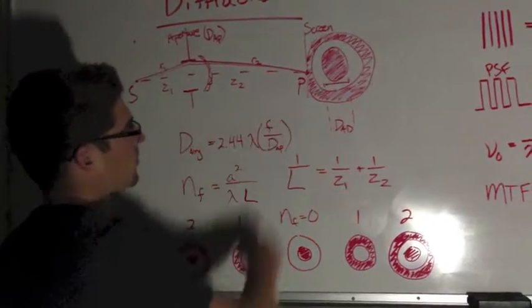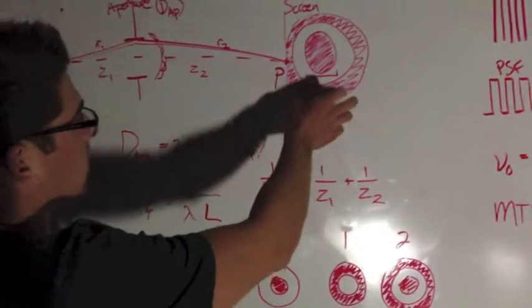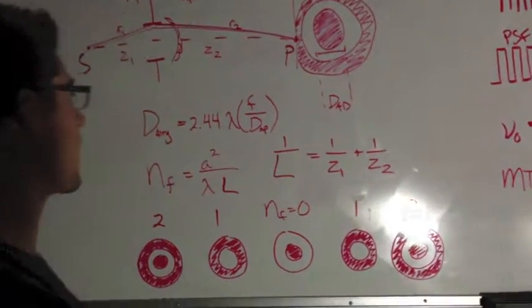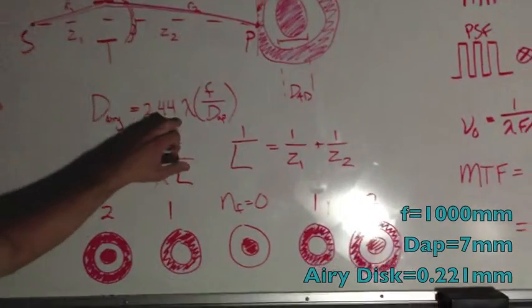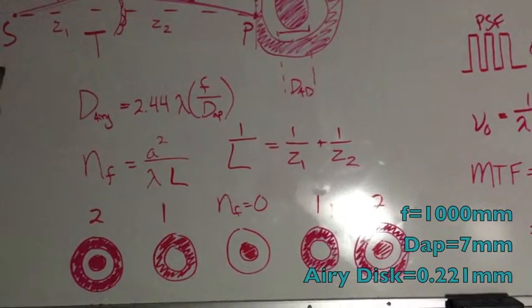Seen here is the central lobe of the diffraction pattern, governed by the first zeros of the Bessel function of the first kind, also called the Airy disk, whose diameter is calculated by 2.44 times lambda times f-number, where f-number is focal length over aperture diameter.